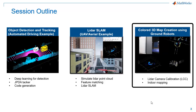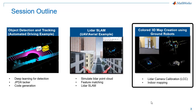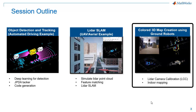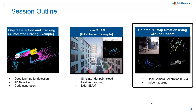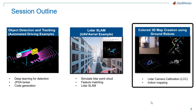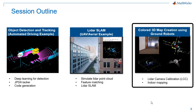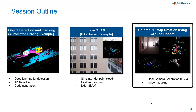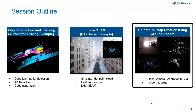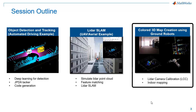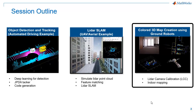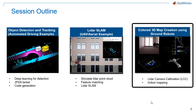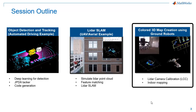In the third example, we will see how to create a 3D colored map of an office arena using a ground robot. We will perform LiDAR camera calibration and use this data to combine camera data with LiDAR data, and then we will perform mapping with these colored point clouds.